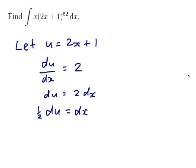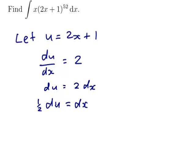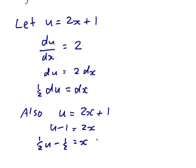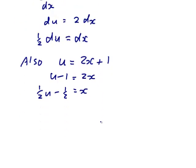Okay, so I just need to rearrange this to get the x in terms of u. So also u equals 2x plus 1. So u minus 1 equals 2x. So a half of u minus a half is equal to x. Alright, let's see how we go with that.